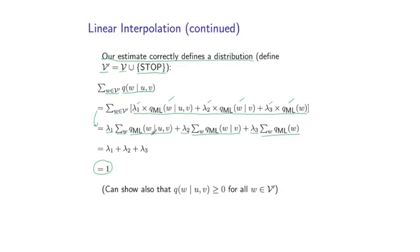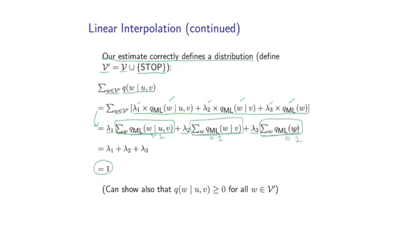Next, we can notice it's simple enough to show that these sums are all equal to 1. That's because the maximum likelihood estimates themselves correctly define a distribution. Or equivalently, you can go back to the definitions in terms of counts and convince yourself of this property. And so we end up with simply lambda 1, lambda 2, lambda 3, sum of these three terms. And by definition, remember this was a constraint on the lambdas, these three terms sum to 1. It can also be shown that for any UV bigram, for any W in the set V', this value is greater than or equal to 0. And that's trivial to show in this case.